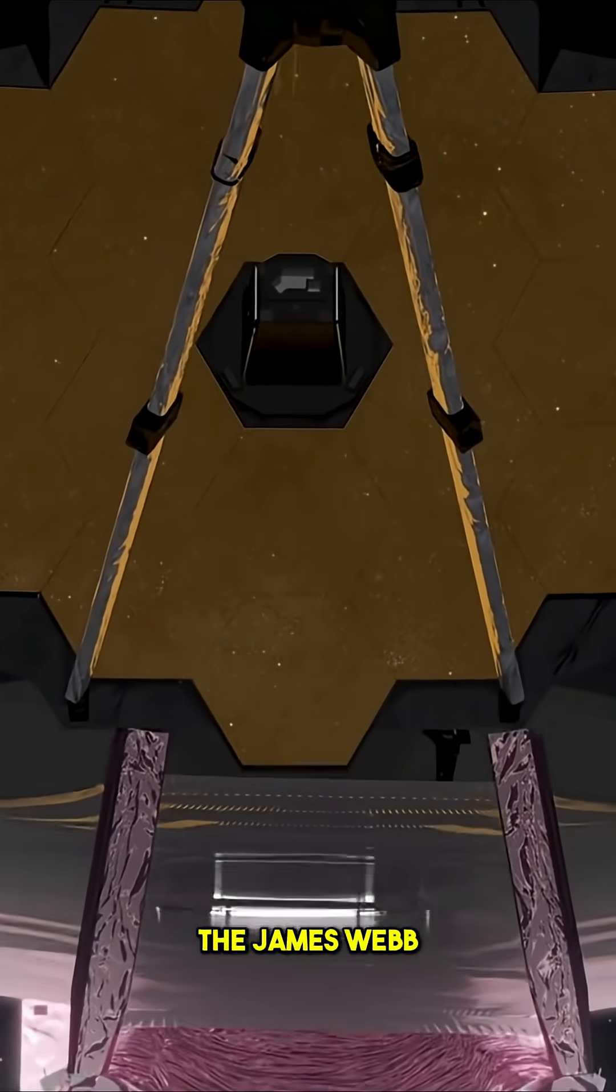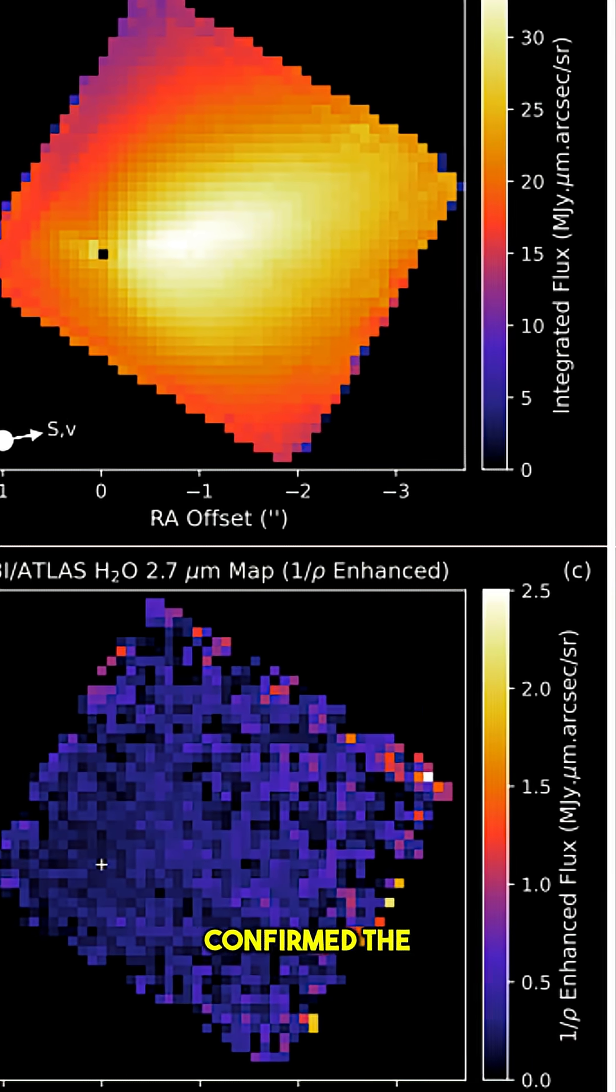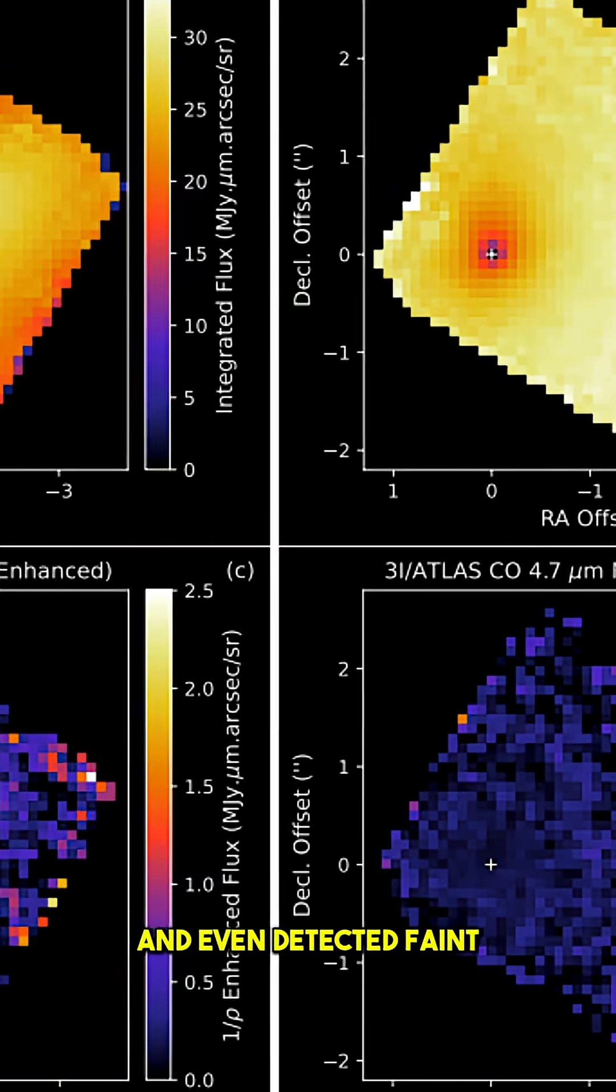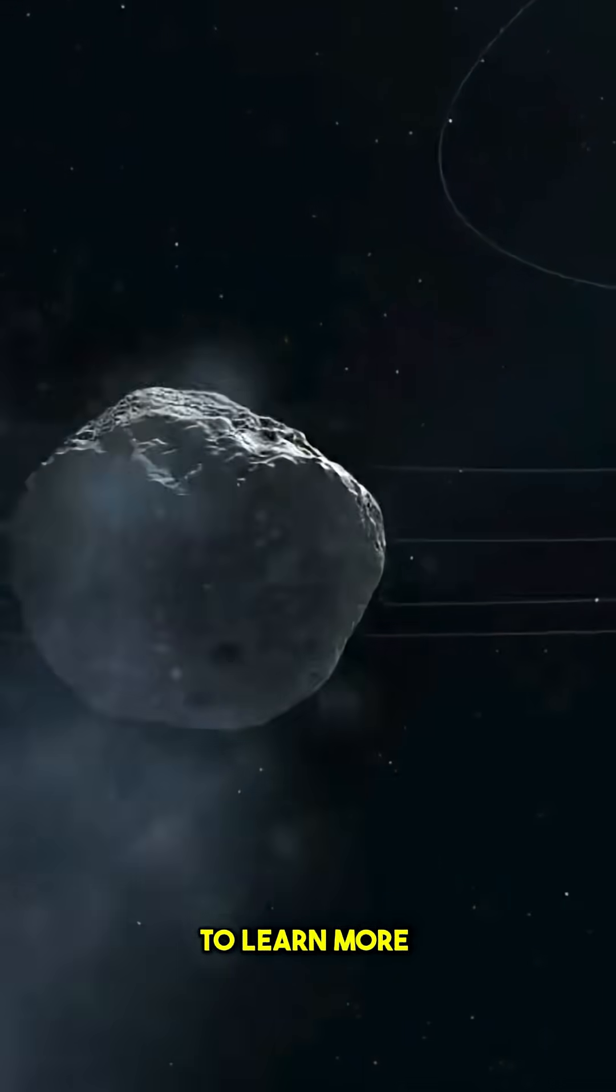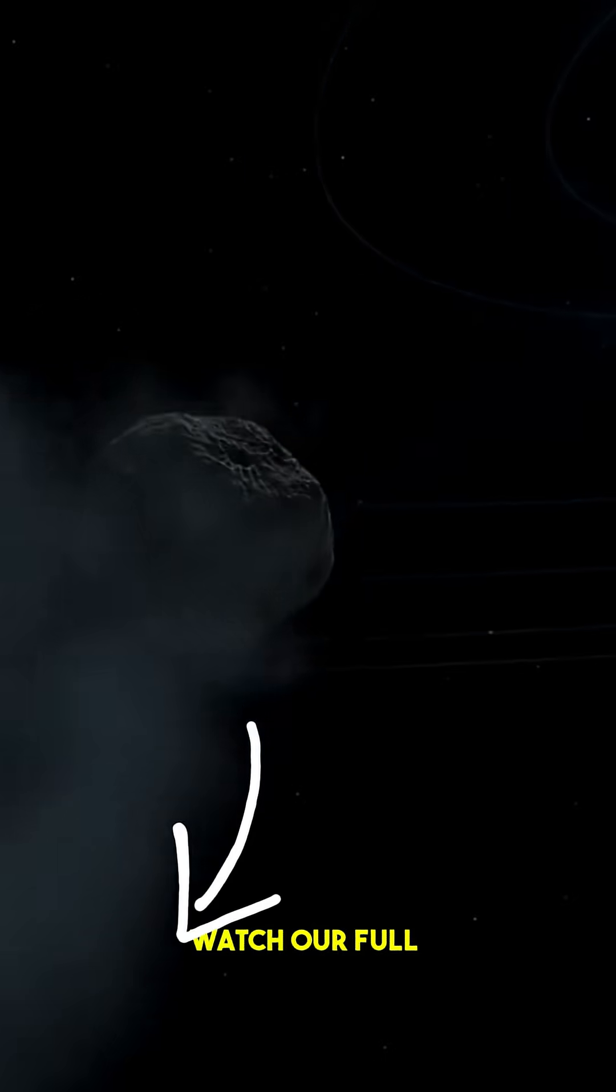At the same time, the James Webb Space Telescope confirmed the strong CO2 signature and even detected faint traces of water ice. Hubble helped measure its size and structure. To learn more about this topic, watch our full YouTube video.